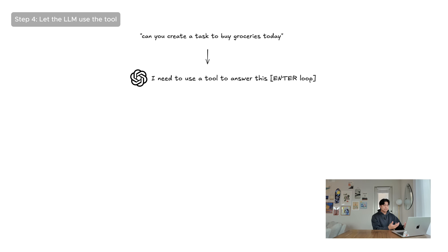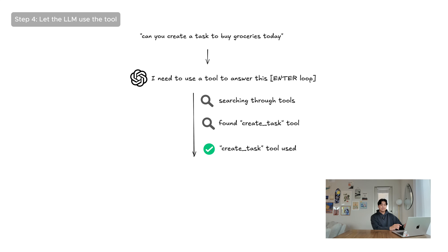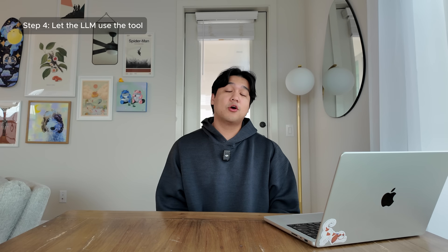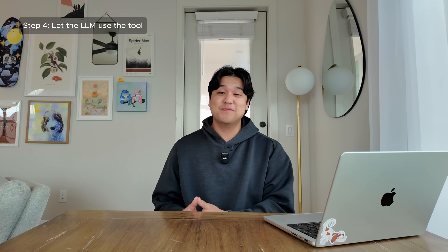So when we ask it 'can you create a task to buy groceries today,' the agent recognizes it needs to create a task, calls the create_task tool with the right parameters, gets back confirmation that the task was created, and sends the final response: 'I have gone ahead and created the task in Ellie.' And now we've created our first real agent — an AI that has access to a real tool that can actually create tasks in Ellie.